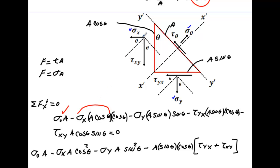That force is coming out at an angle, so to project it along the x-prime axis I multiply by cosine theta again, giving σx times A times cos²θ. For the normal stress in the y-direction, the area on that face is A times sine theta, giving a force of σy times A times sine theta. To project that force along the x-prime axis I multiply by sine theta, giving σy times A times sin²θ.